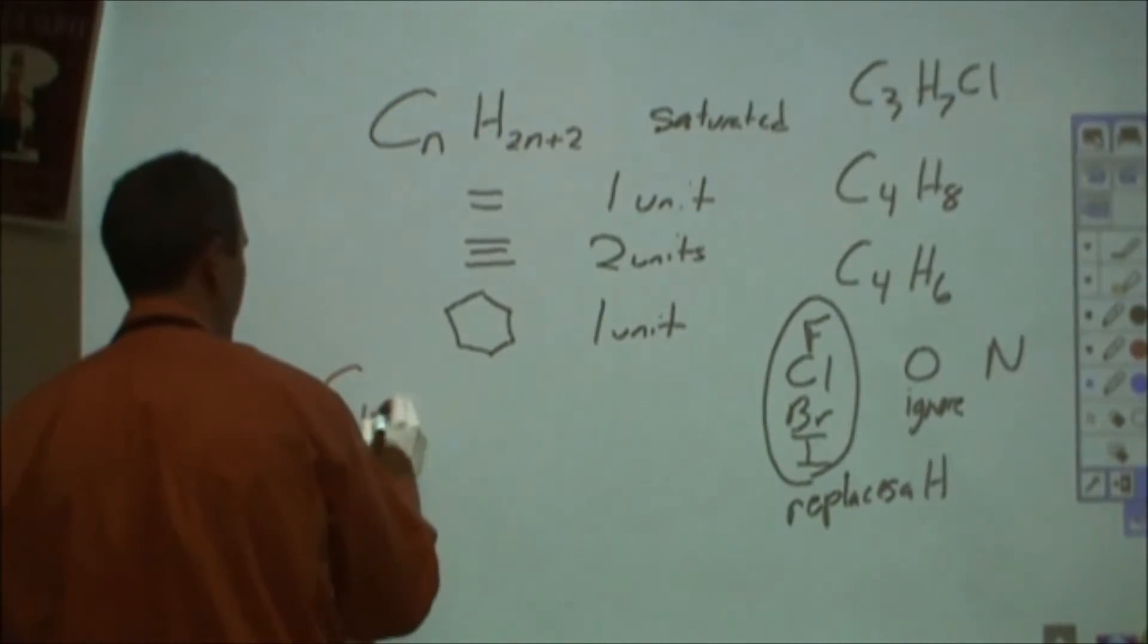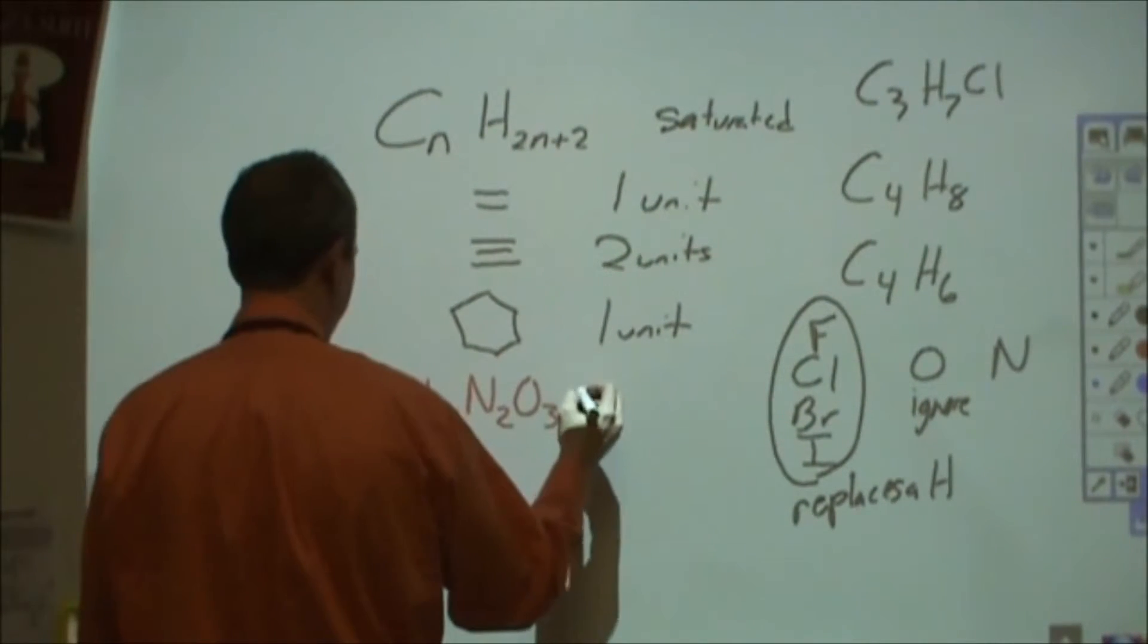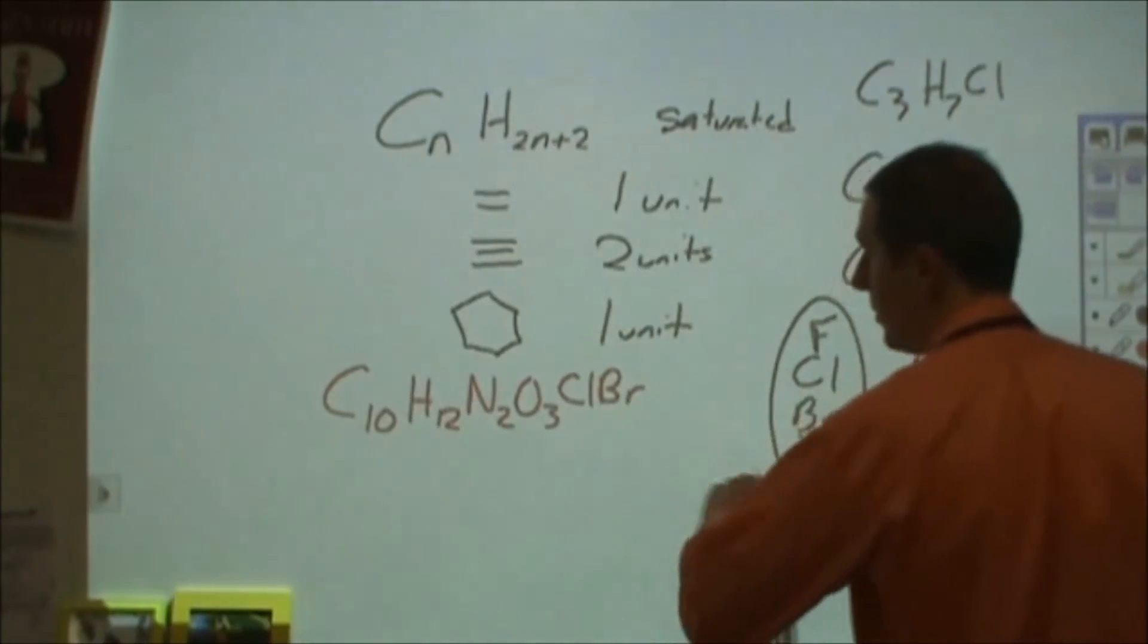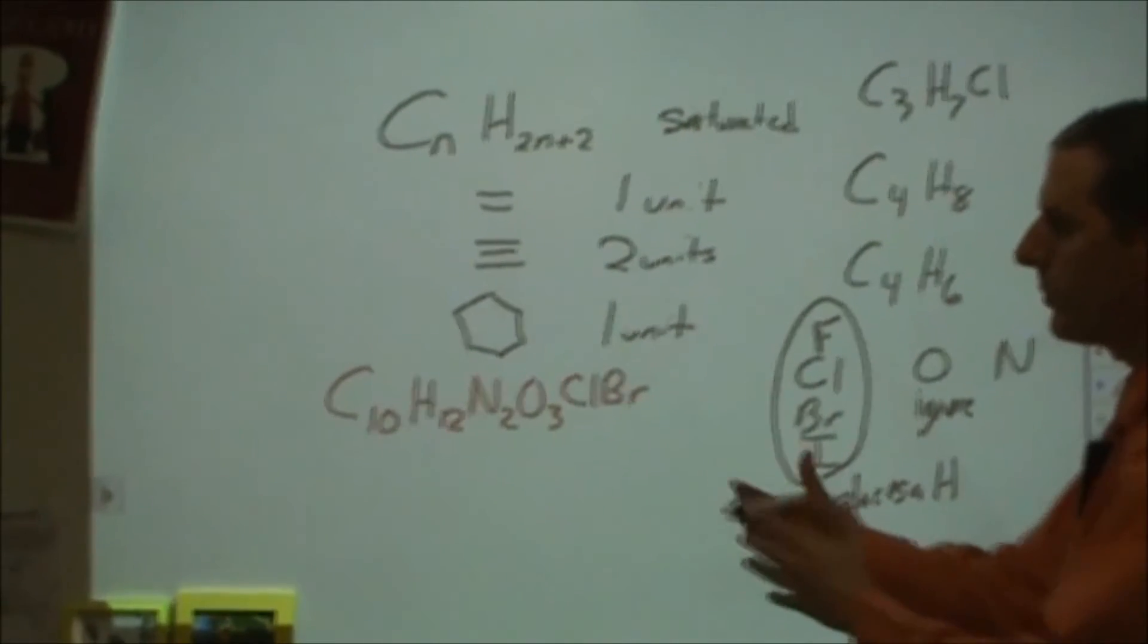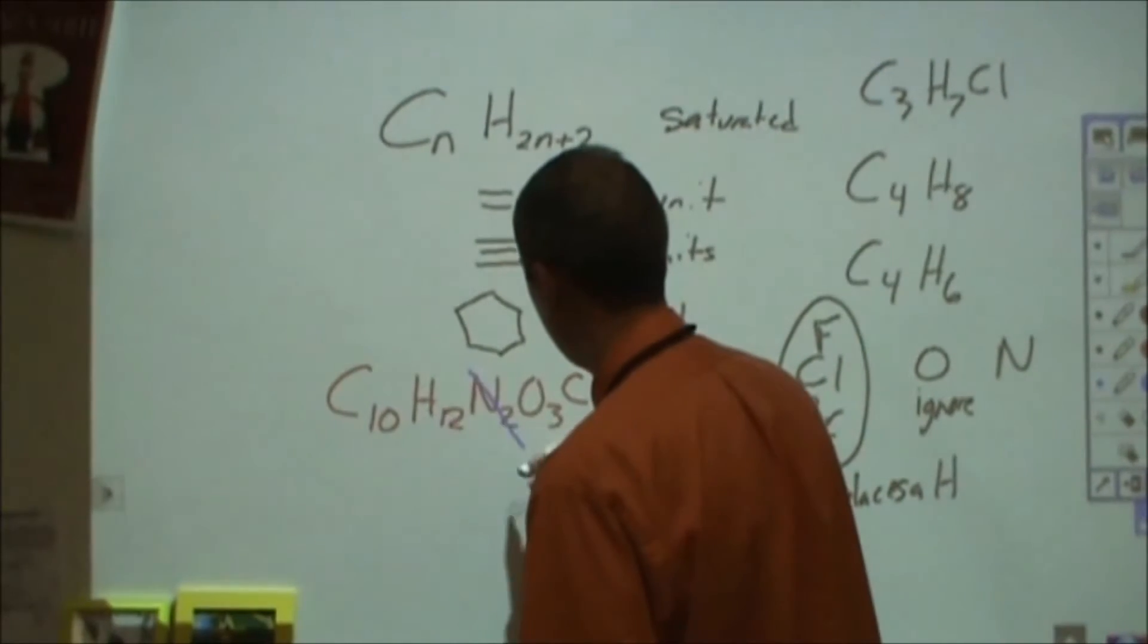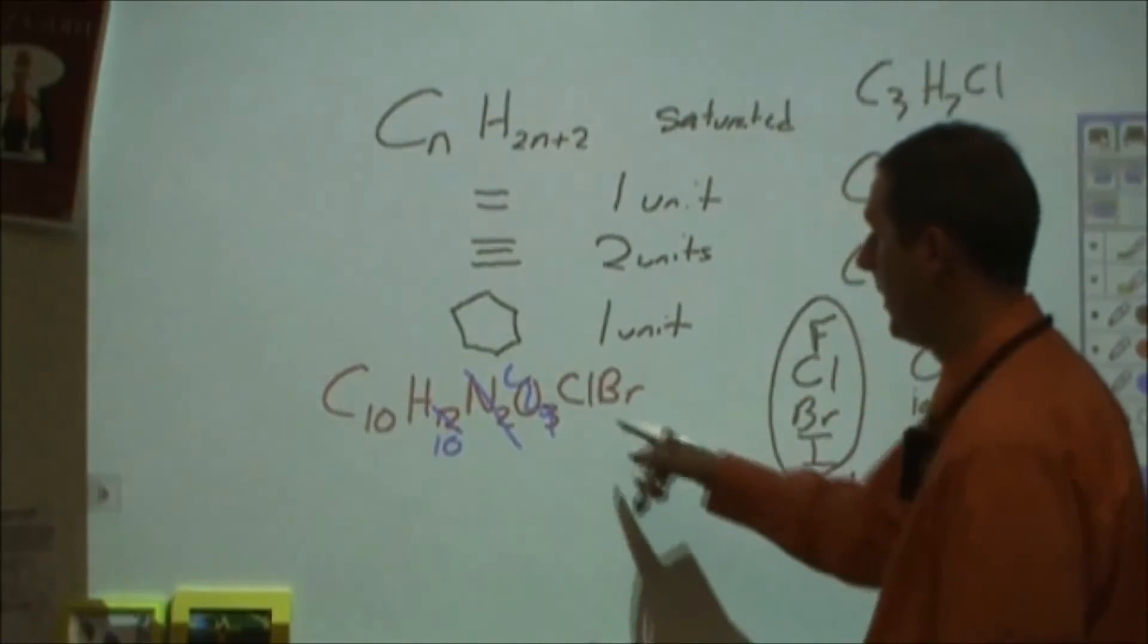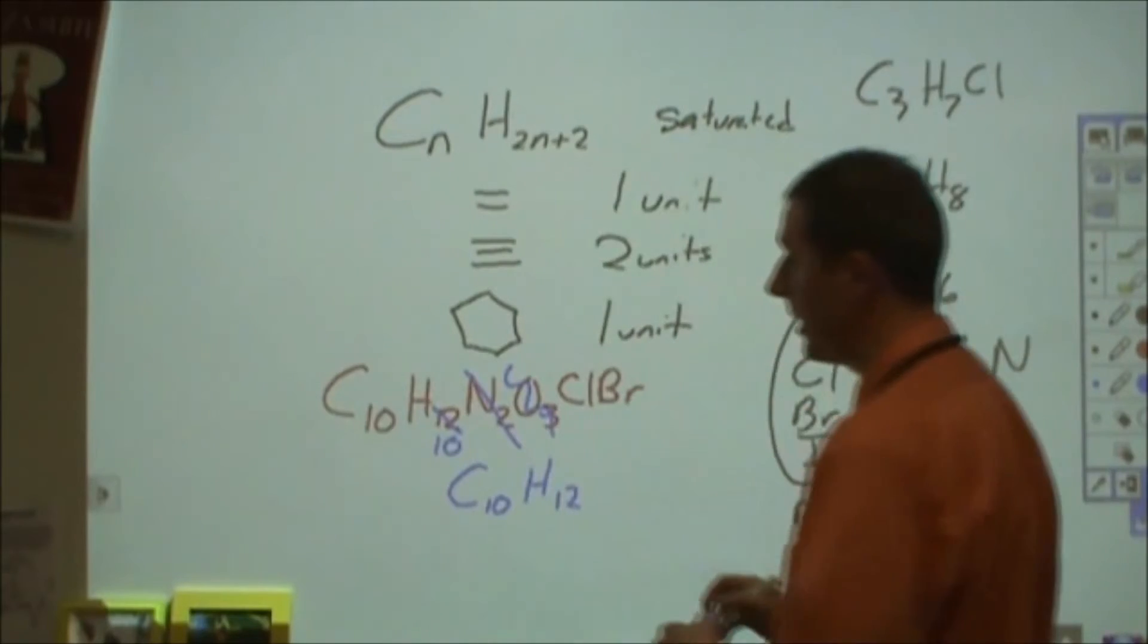So if I give you a formula and I say, we have C10H12N2O3ClBr, and I say what's the units of unsaturation on this? What I would like to do is compile this into what would this be with just hydrogens? So the two nitrogens, I'm going to take those away and I'm going to take away two hydrogens with it to make it C10H10. The oxygens I just ignore, I don't have to do anything for that. And then the Cl and the Br count as hydrogen. So simplifying this down, I would think of this as C10H12.